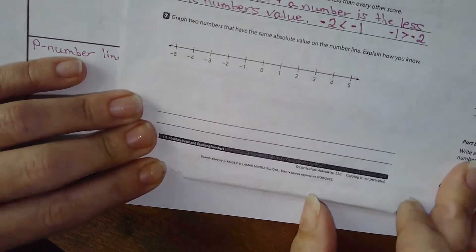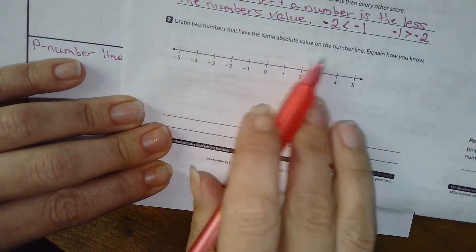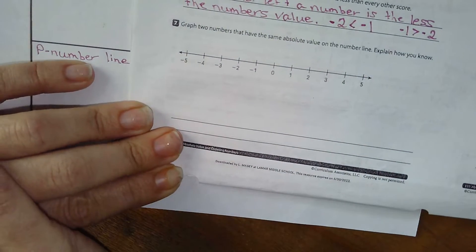Graph two numbers that have the same absolute value on the number line. Explain how you know.